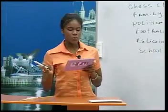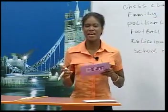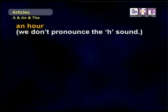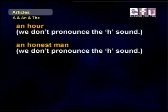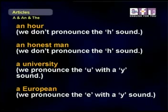Sometimes we don't use an article at all when we use special names like people or cities and countries. We also don't use articles when we talk about all other people or things in a group. For example, New York people, or all people. Remember that it is how we say the word, not how we spell it, that determines if we use A or AN. Take a look at some examples.